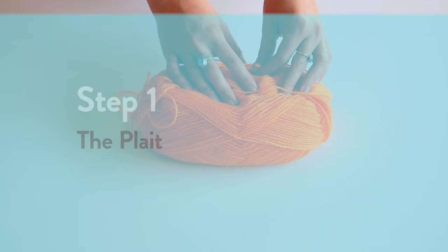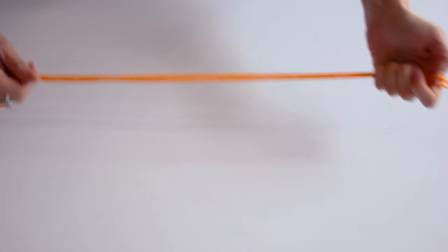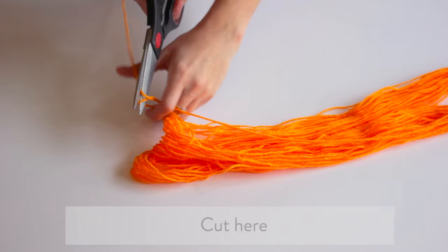Step 1. The plait. Take a ball of orange wool. Unwrap the wool like this until it looks like this.